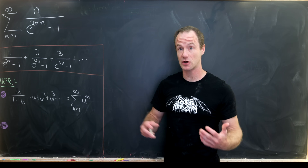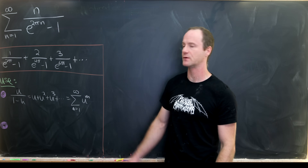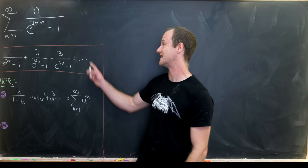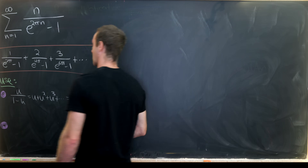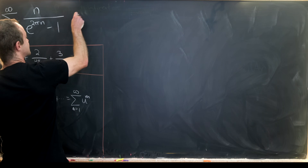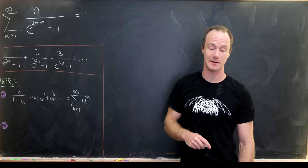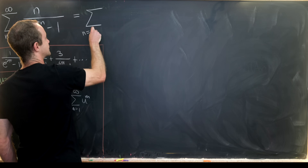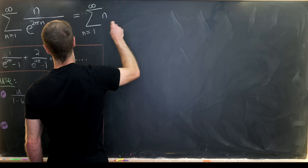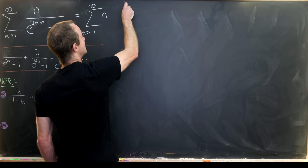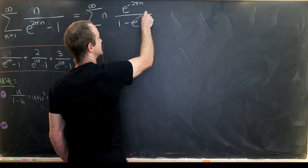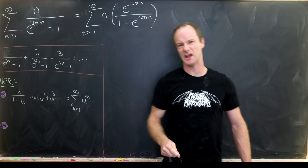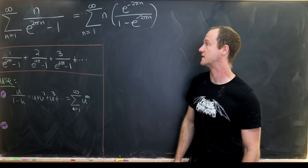Let's start manipulating this so we can apply the geometric series. Each term looks like something we could expand as a geometric series. I'm going to multiply the numerator and denominator by e to the minus 2πn. That gives the sum as n goes from 1 to infinity of n times e to the minus 2πn over 1 minus e to the minus 2πn.